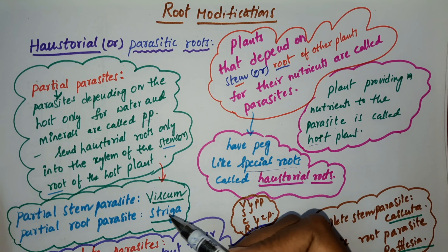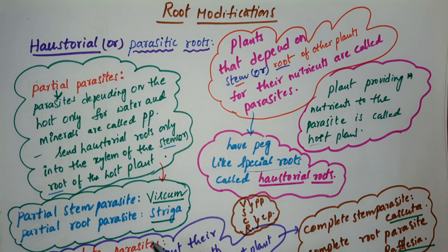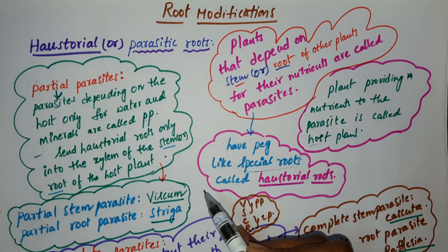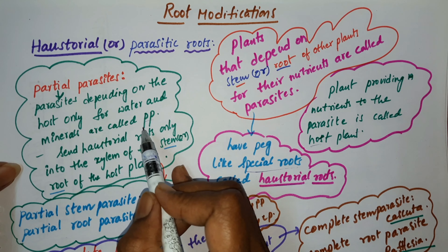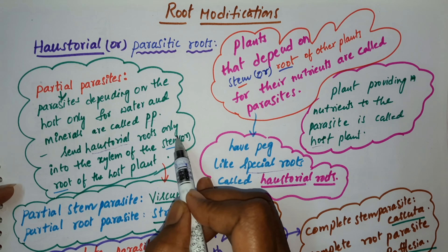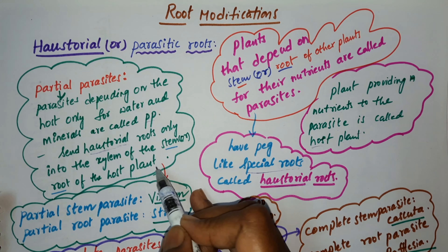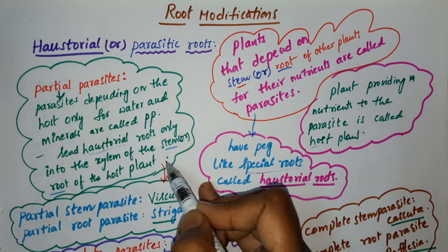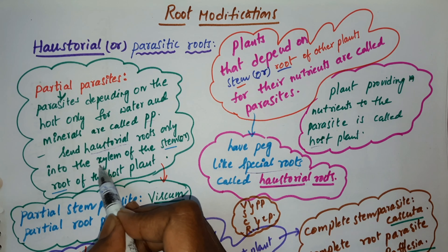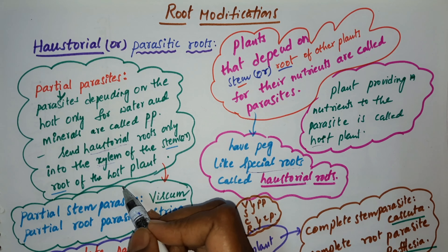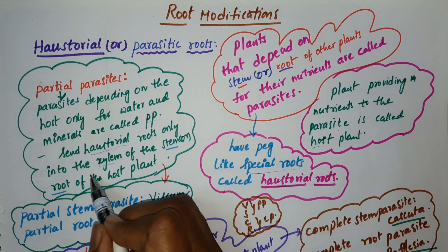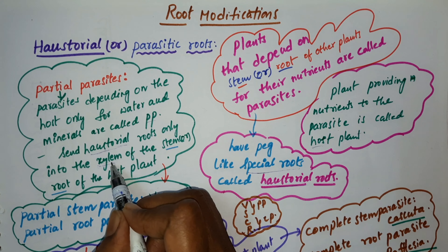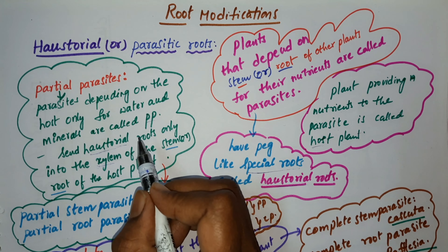In these parasites, there are two types: partial parasites and complete parasites. Partial parasites depend on the host only for water and minerals, and send haustorial roots only into the xylem of the stem or root of the host plant. Water and minerals are transported through xylem. Such parasites are called partial parasites.